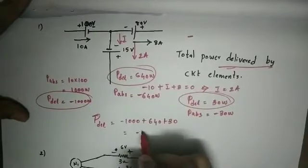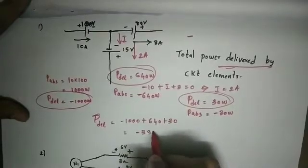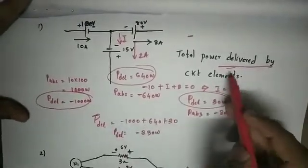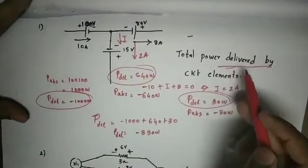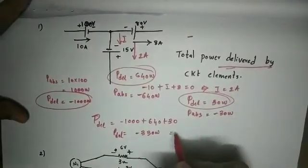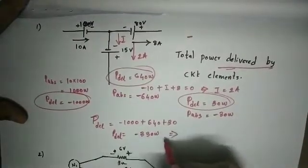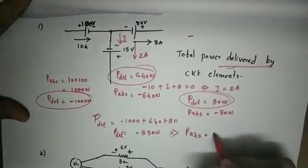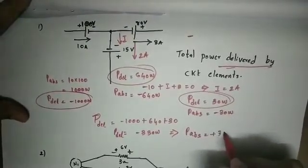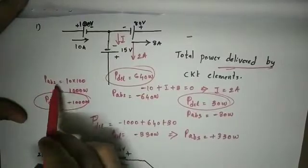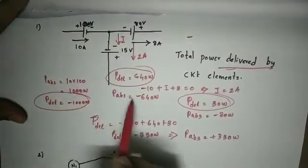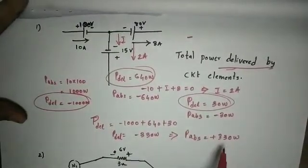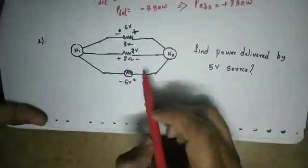Total power delivered is minus 1000 W plus 640 W plus 30 W. The total power absorbed is 1000 W plus 330 W, which equals 1330 W.